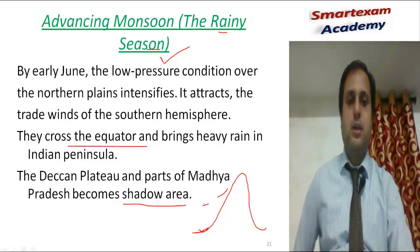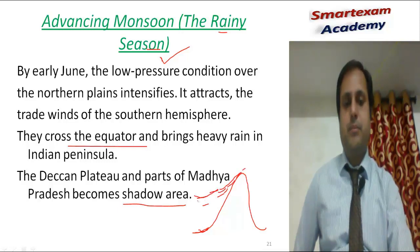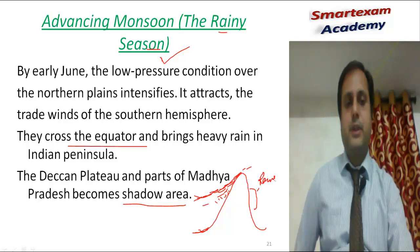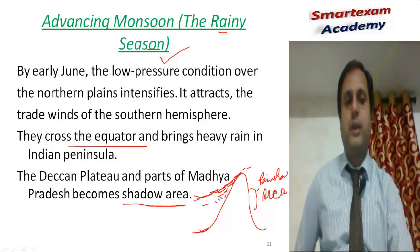In orographic rainfall, when the monsoon encounters a mountain, the clouds ascend the mountain and bring rainfall on the windward side. The other side of the mountain is called the rain shadow area. In the rain shadow area, rainfall does not happen — rain occurs on the windward side but not on the leeward side.